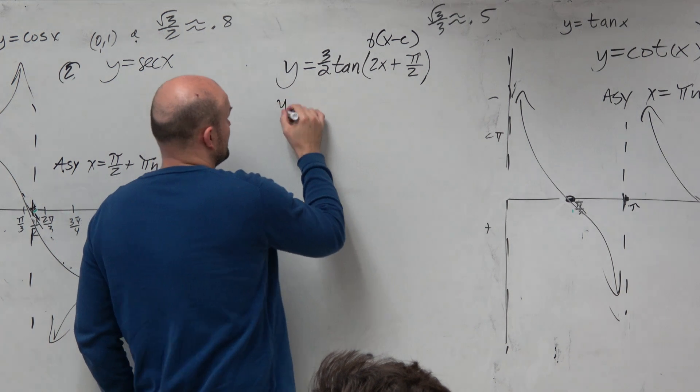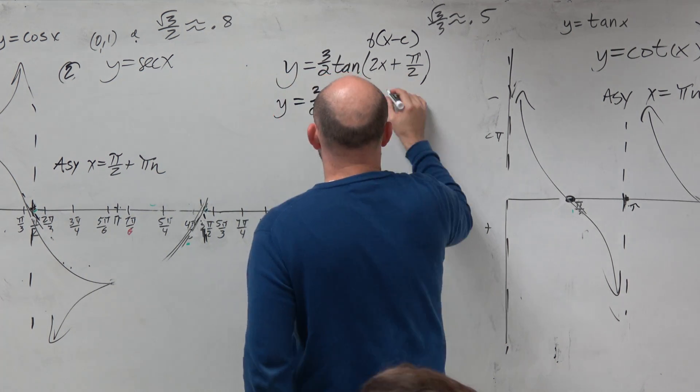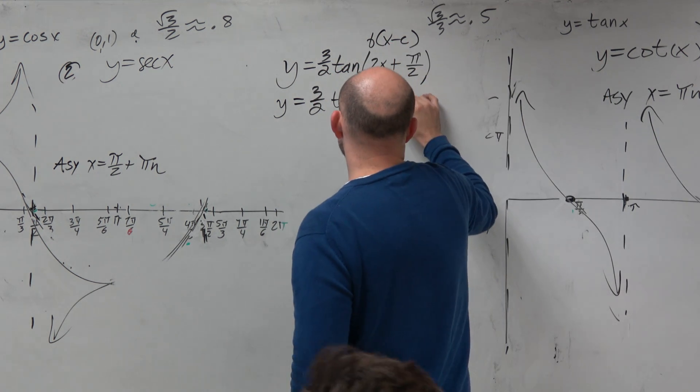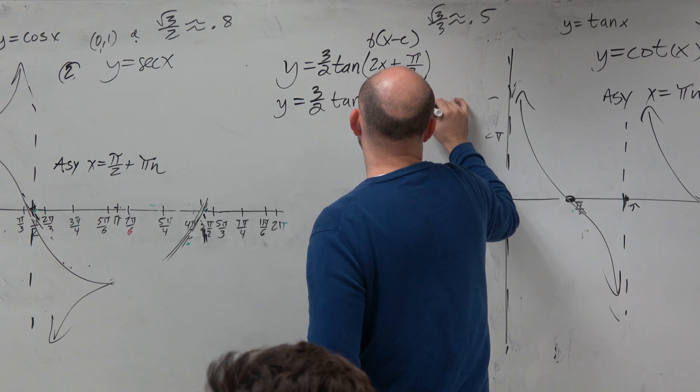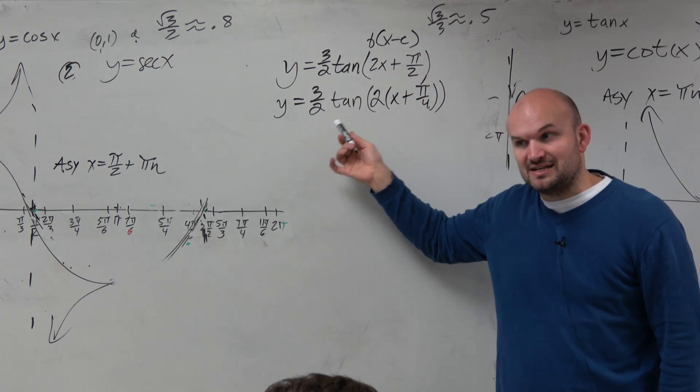No. So I want to be careful here. I'm going to rewrite this as 3 halves tangent. If I factor out a 2, that's like dividing out of 2, I would get 2 times x plus pi over 4. We talked about this last class, but is everybody OK with my factoring skills there?